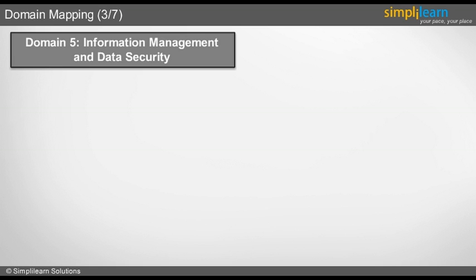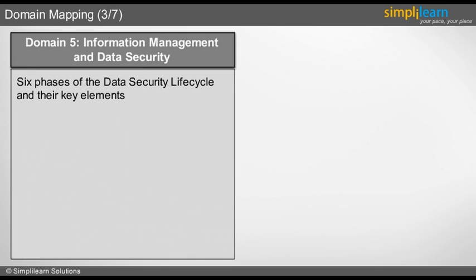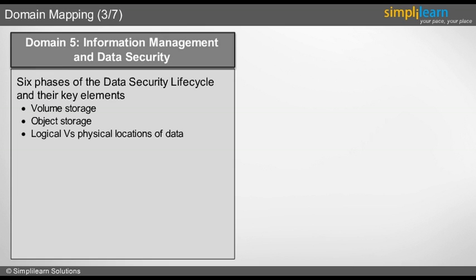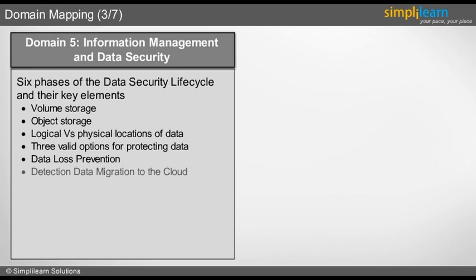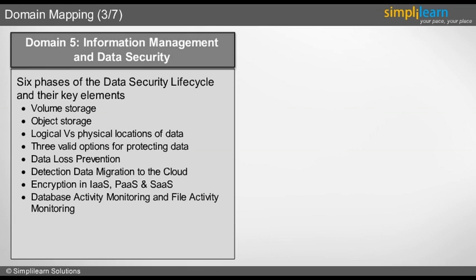Domain 5: Information Management and Data Security. In this domain we will look into the six phases of the data security lifecycle and their key elements such as volume storage, object storage, and logical versus physical locations of data. Three valid options for protecting data, data loss prevention, detection of data migration to the cloud. We will also look into encryption in IaaS, PaaS and SaaS, database activity monitoring, file activity monitoring, data backup, data dispersion and data fragmentation.